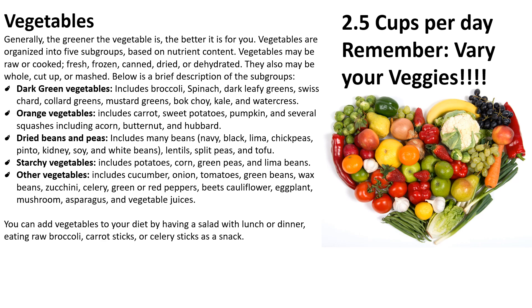Dark green vegetables include broccoli, spinach, dark leafy greens, Swiss chard, collard greens, mustard greens, bok choy, kale, and watercress. Orange vegetables include carrot, sweet potato, pumpkin, and several different squashes including acorn, butternut, and hubbard.